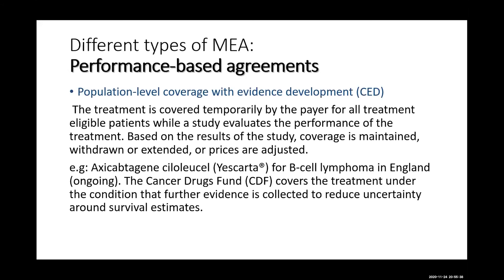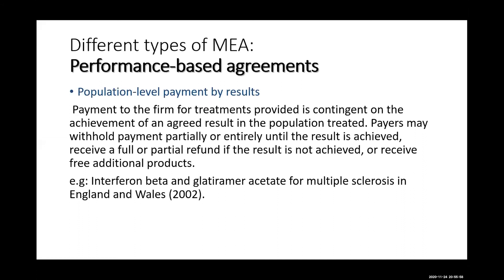Population-level coverage with evidence development is used when there is significant uncertainty around results or concern over the trial design. There is also population-level payment by result, which is similar to patient-level payment by result but conducted at the population level.